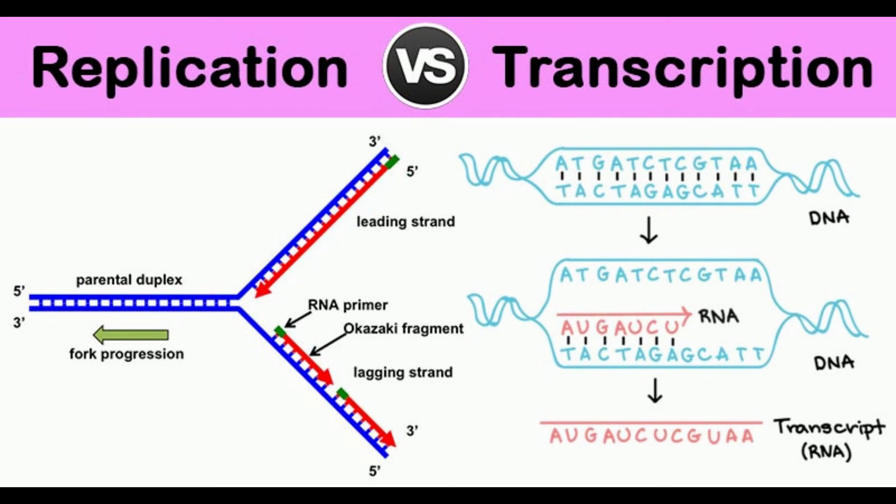18. Bond: Replicated DNA strand remains hydrogen bonded to its template DNA strand. Transcribed RNA strand separates from its DNA template strand.